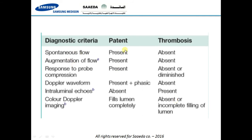The diagnostic criteria of deep venous thrombosis: normal patent veins should show spontaneous flow with augmentation, a phasic Doppler waveform, response to probe compression, and no intraluminal echoes. Color Doppler should fill the lumen completely. In DVT, there is no spontaneous flow, no augmentation, absent or diminished probe compressibility, absent Doppler waveform, intraluminal echoes, and absent or incomplete color filling.